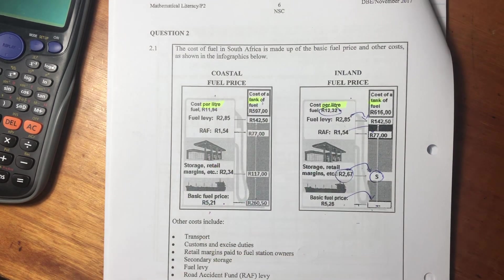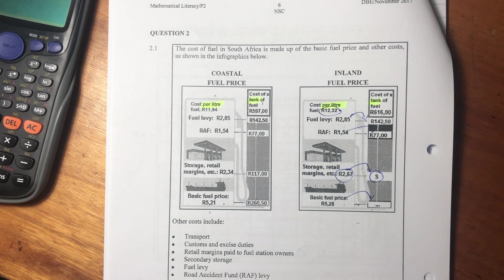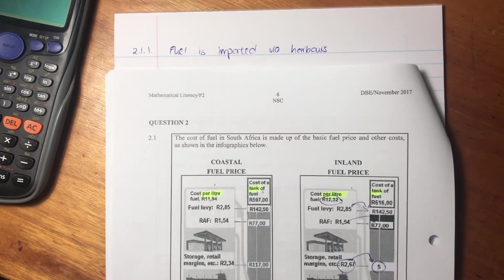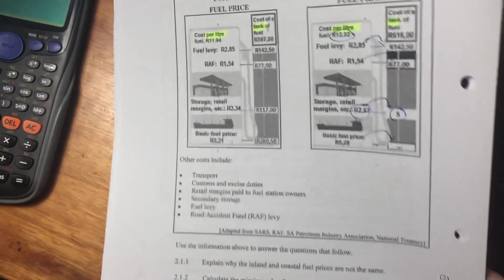So I've just written here, fuel is imported via harbors. You can make it a more lengthy answer if you want, say, and then to get it inland, you have to incur another cost to transport it there. You can be more wordy than I am, but I'm just giving you my view.